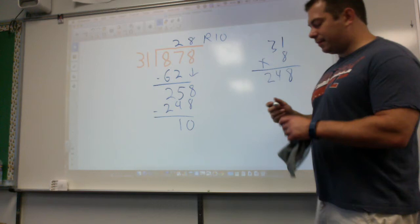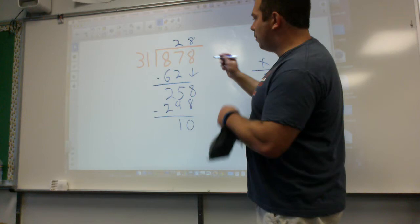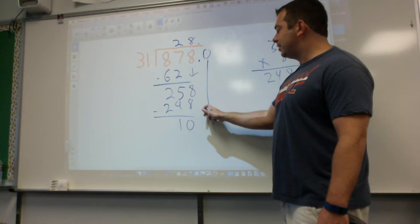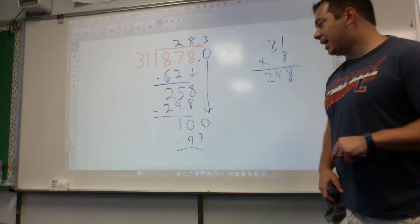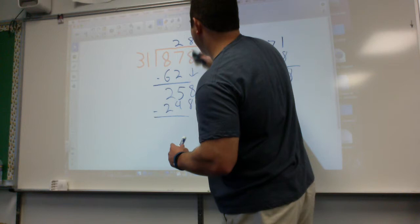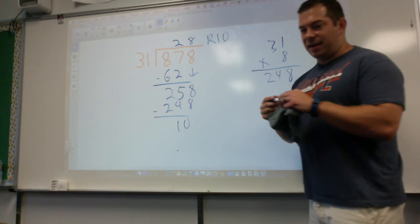Later on this year, what you would do is you would start putting decimal points out, and you're going to annex a 0 there and drop that 0 down. And how many times could 31 go into 100? It would be 3 times, 93. And you would go from there and add more and more decimals until it finished or I told you to stop. But we're not going to do that today. Your remainder was 10, so it's 28 remainder 10 is the answer.